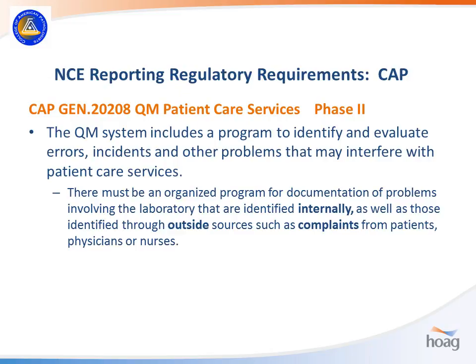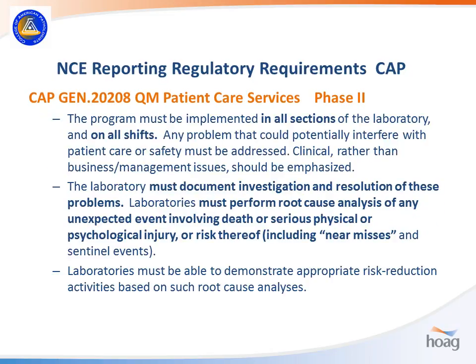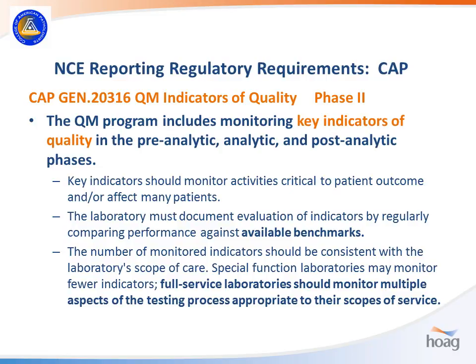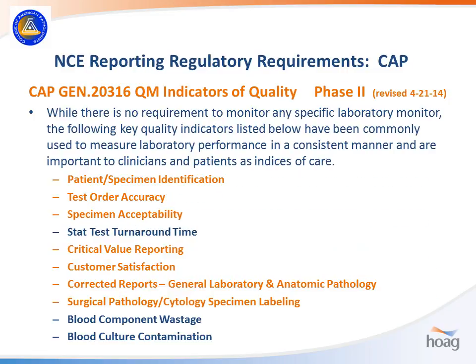The CAP requires a system to identify and evaluate errors both internally and from outside sources — complaints from patients, physicians, and nurses — and that is a phase two requirement. The program must be implemented in all sections of the laboratory and all shifts. You must document investigation and resolution of problems, perform root cause analysis of any unexpected event involving death or serious physical injury, and include near misses even if they didn't result in actual harm. You must also have key indicators of quality in all three phases of testing. Several of the CAP-suggested key indicators can be mined directly from your non-conforming event data.